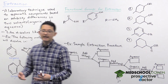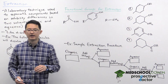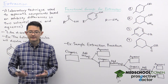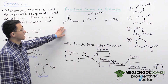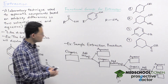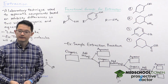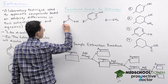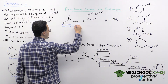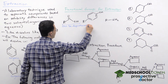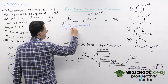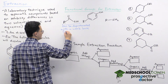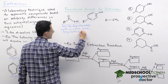This is something we can take advantage of in extraction, because it's easy to introduce full positive and negative charges using acid-base chemistry. Here are the functional groups relevant for extraction. The carboxylic acid is a fairly strong weak acid, so it's fairly easy to deprotonate. It can be deprotonated with a weak base — typically sodium bicarbonate (NaHCO3).